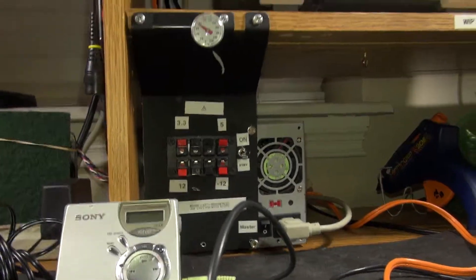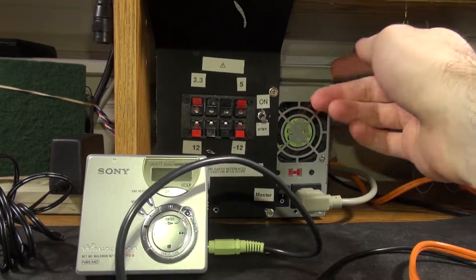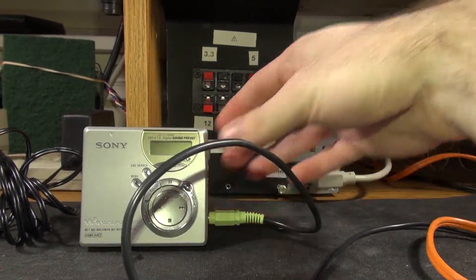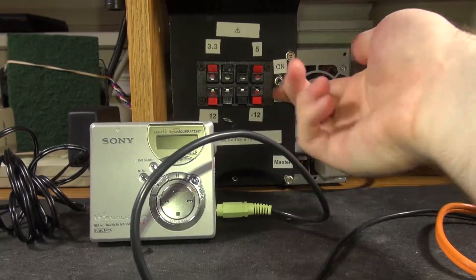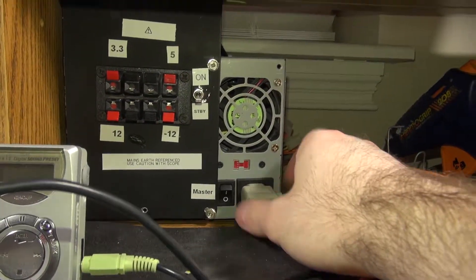Down here we've got the currently the media disk player we're using for music. Media disk, I always say that. Mini disk. I want it to be called a media disk but it's a mini disk. Got the power strip. So it's actually cool. I like switches and feeling like you're some sort of launch station. So you turn the switch up on out there.